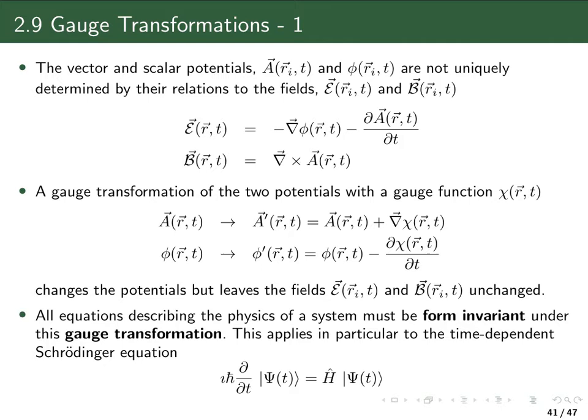In particular, we can look at a so-called gauge function chi. If we add the gradient of chi to the vector potential, or subtract the time derivative of chi from the electrostatic potential, this will change the potentials but leaves the electric and the magnetic field unchanged. These new potentials phi prime and A prime describe the electric and magnetic fields equally well as the original scalar and vector potentials. These kinds of equations are called gauge transformations.